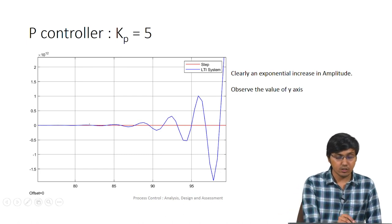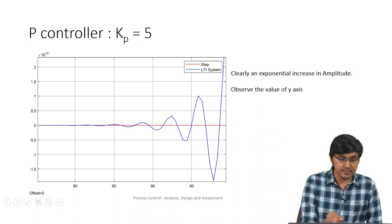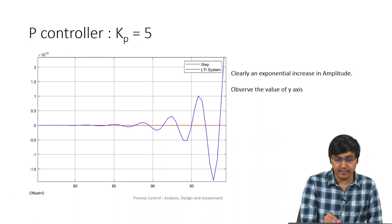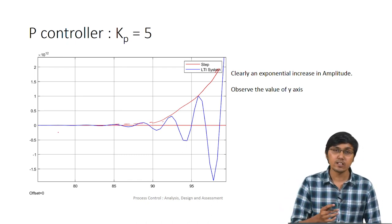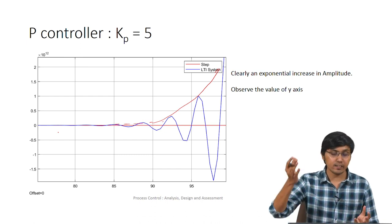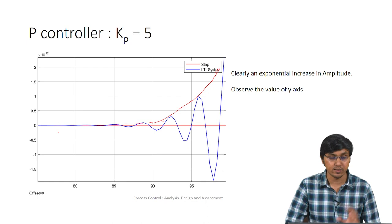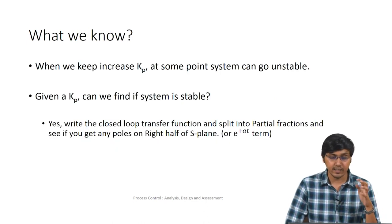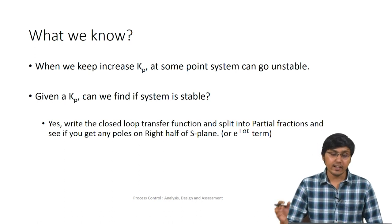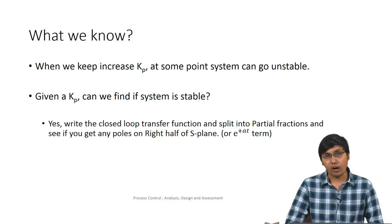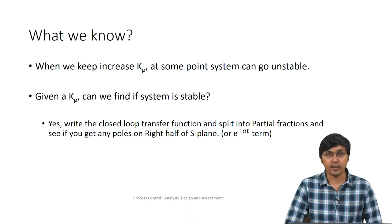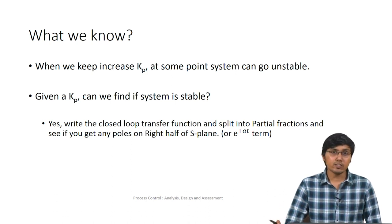To further illustrate the exponential increase, let us take Kp = 5. Now the y-axis is in the order of 10¹², and we can clearly see the values are not increasing by equal amounts but growing exponentially. This brings up the key question: how do we find the value of Kp at which the system goes unstable? Given a Kp, can we determine whether the system is stable without fully resolving into partial fractions?